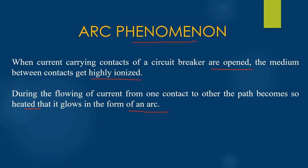The current is not interrupted at this point only — the current continues to flow into the system with the help of the arc so formed. As the potential difference between the two contacts is quite small, it maintains the arc. During the arcing period, the current flowing between the contacts depends upon the arc resistance. If the arc resistance is greater, then a smaller amount of current will be flowing between the contacts.